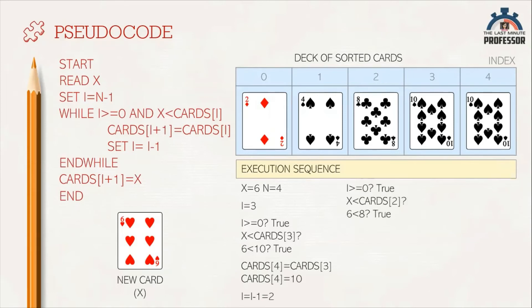Again, we are checking the condition. Is the value of i greater than or equal to 0? Yes, 2 is greater than or equal to 0. Is the value of x less than cards[i]? Is x less than cards[2]? Is 6 less than 8? Yes. So the statements inside the while loop get executed.